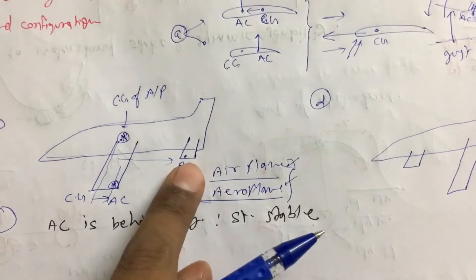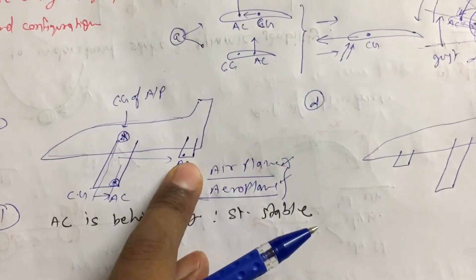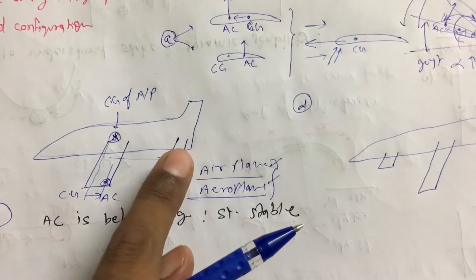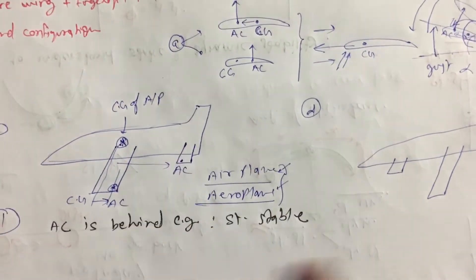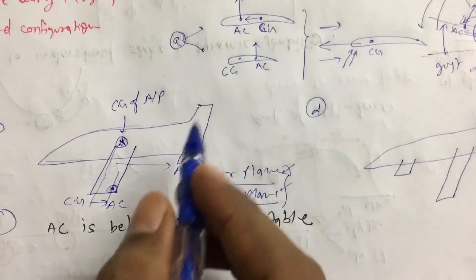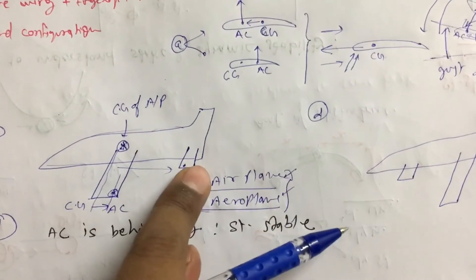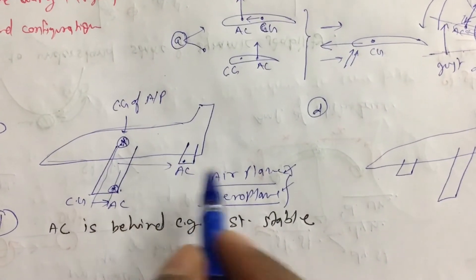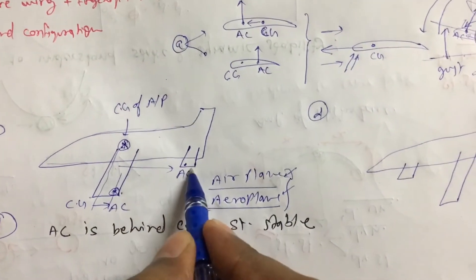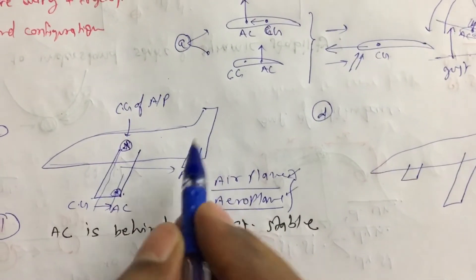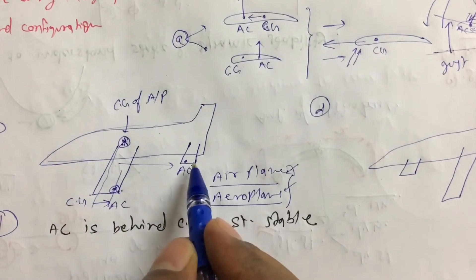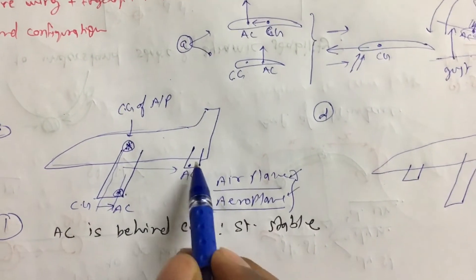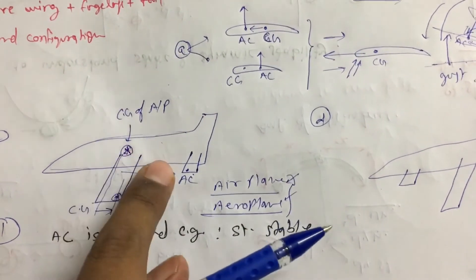So the tail will also contribute positive stability — because of the tail, this aeroplane is also statically stable. Because of the wing it is statically stable, because of the tail it is statically stable. What about the combined effect of both? Because of both, it is also statically stable.